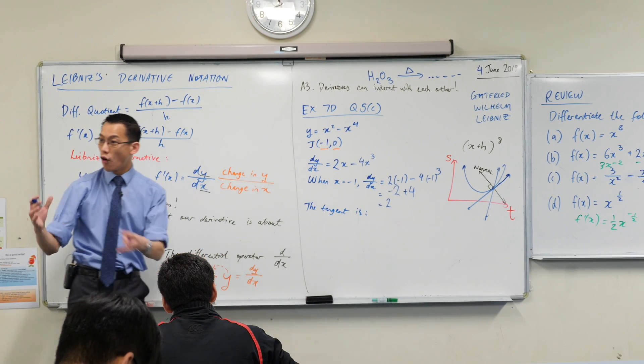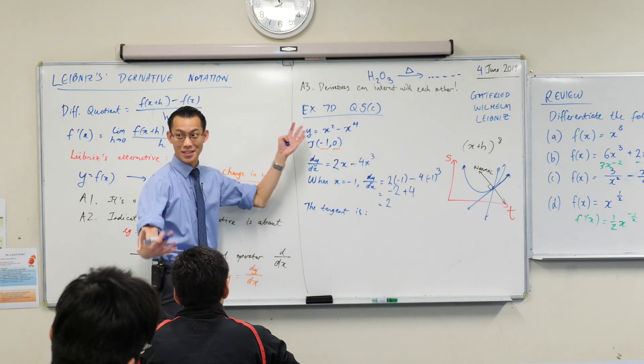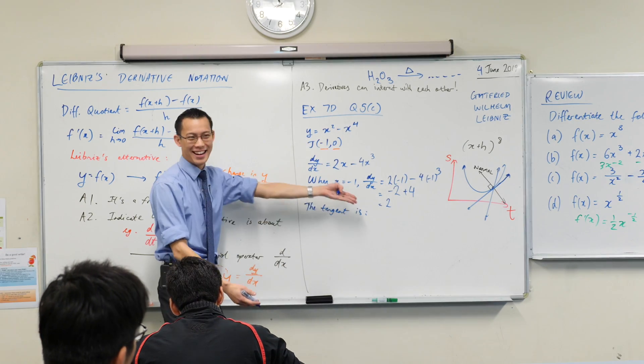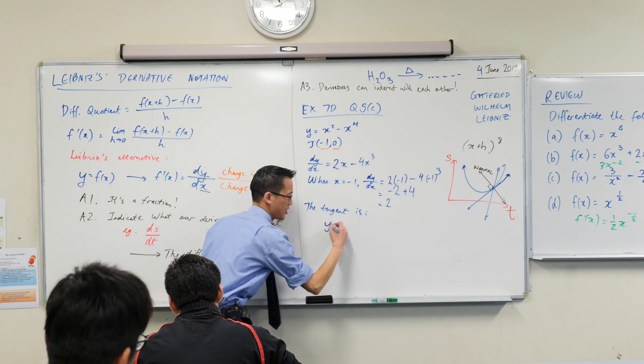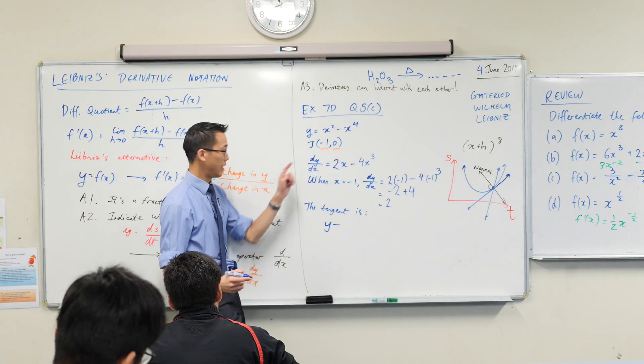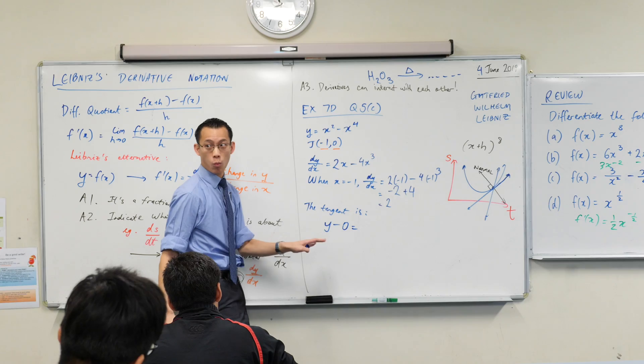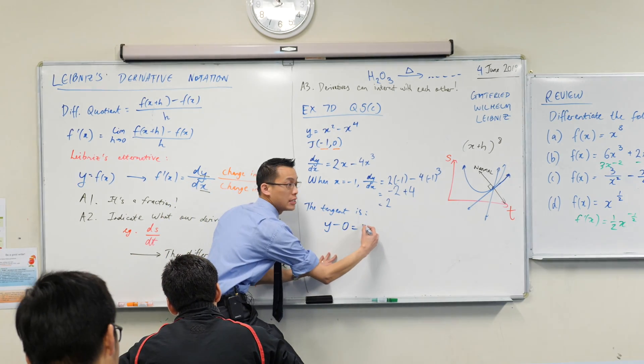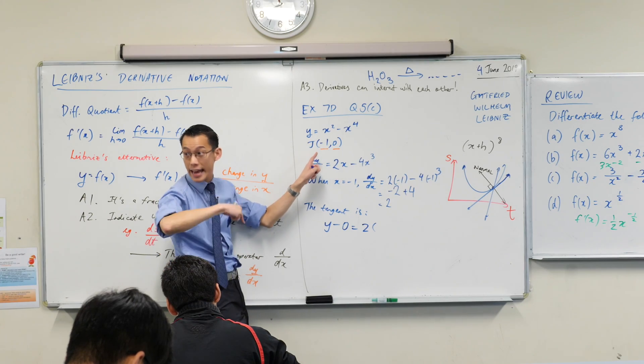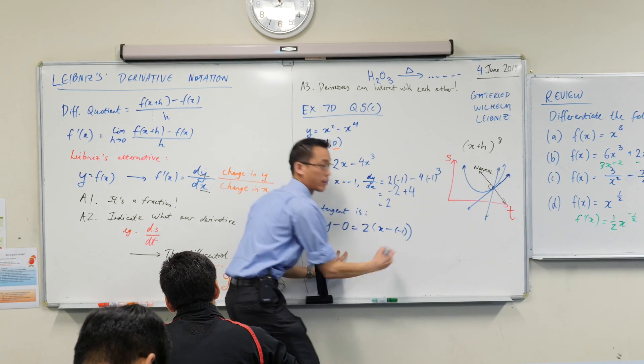And I'm going to use that form of the equation of a straight line, which takes the gradient and the point. What's that form called? Point gradient. Point gradient, because it's got a point and a gradient in it. And it is, of course, Leroy, do you want to finish that, y minus y1, which in this case is—what's y1? It's that y coordinate there, so 0 equals, what's on the other side? The gradient, m, which in this case is 2, outside of x minus negative 1. I'm even going to write that, x minus negative 1, like so.